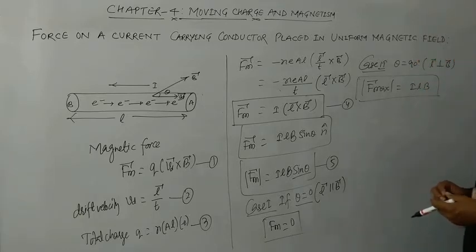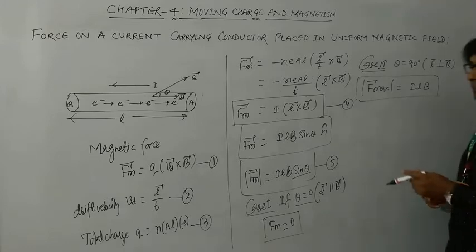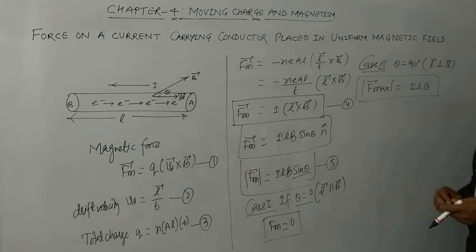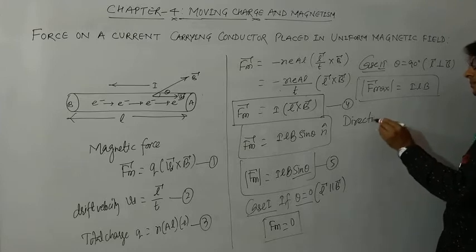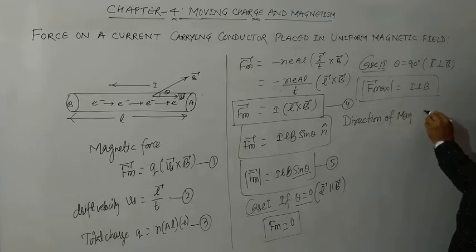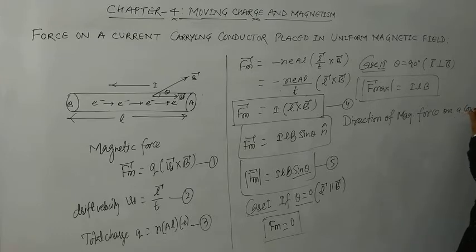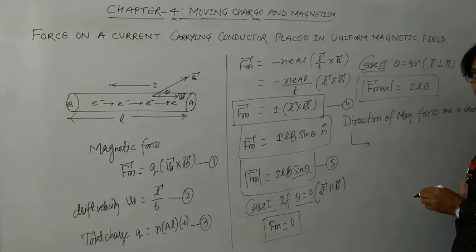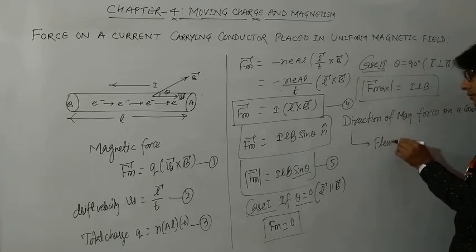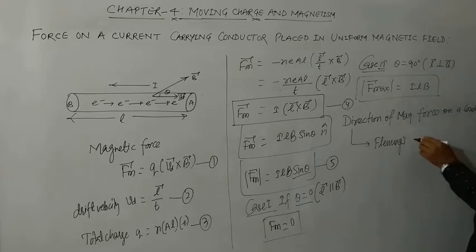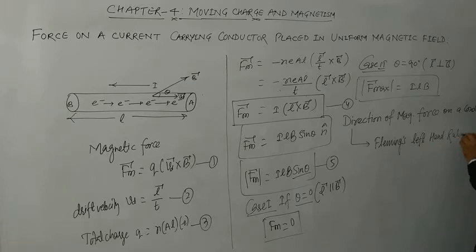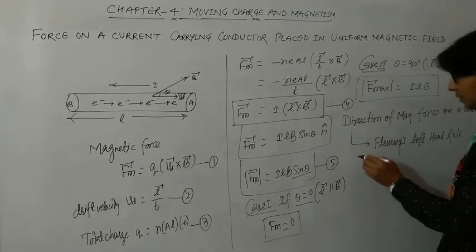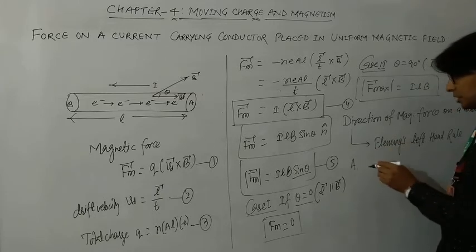Since force is a vector quantity it must have a direction. To find the direction of magnetic force on a conductor carrying current I, we use Fleming's left hand rule. Fleming was the scientist who gave this rule. We will first understand how this rule works and then write down its statement.